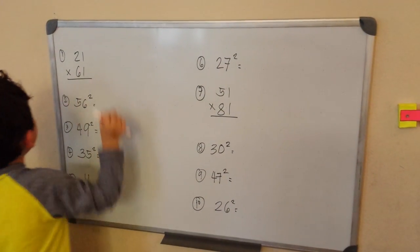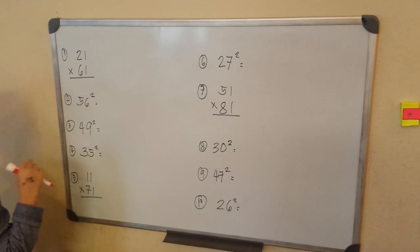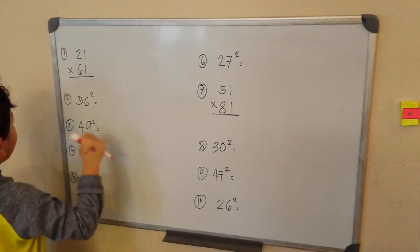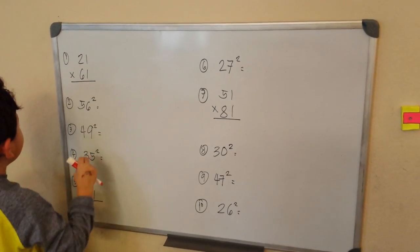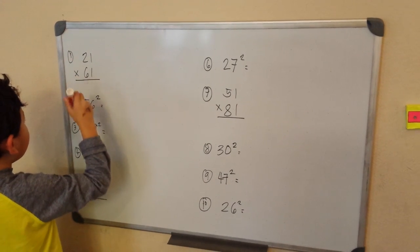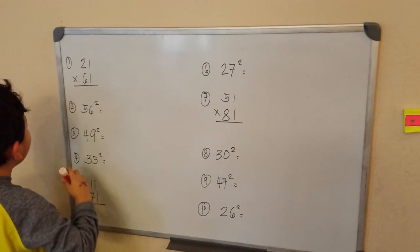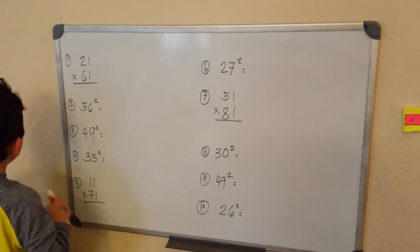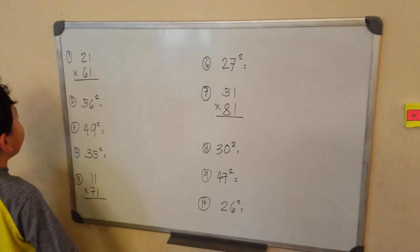We have number 1: 21 times 61. 2 times 6 makes 12, plus 0 at the end, 120.